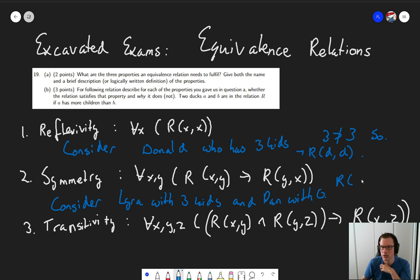Now, R(Lyra, Pan) holds, but Pan Lyra does not. All right, Lyra has more kids than Pan, but Pan does not have more kids than Lyra. So, again, we have come up with a concrete counter example to show that the relation is not symmetric.